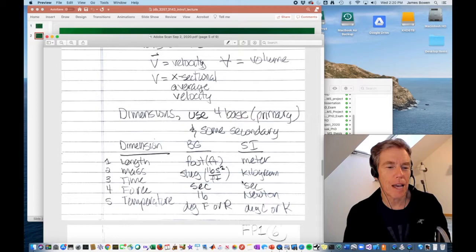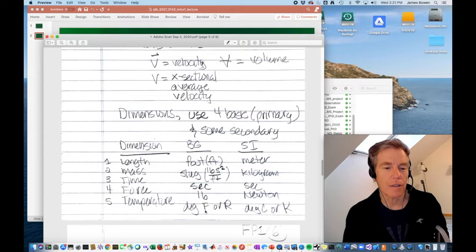And the secondary dimension that we'll use is the dimension of force. So, in the British Gravitational System, the length is in feet. The mass unit is a slug. That's not used very often. You can represent it as pound second squared per foot. The time unit is seconds. The force unit is pounds. And the temperature unit is degree Fahrenheit or degree Rankine. A degree Rankine starts from zero. The Fahrenheit has both negative and positive values. In the SI unit system, the length unit is meter. The mass unit is kilograms. Time unit is seconds. The unit of force is a Newton. And the unit of temperature is degree Celsius or degree Kelvin.